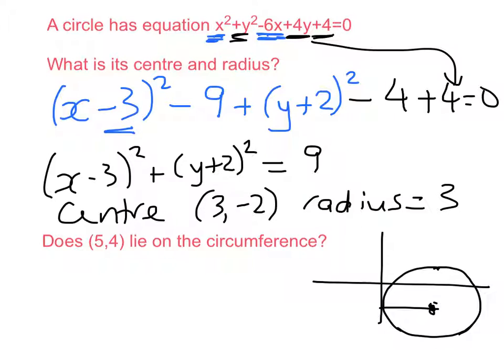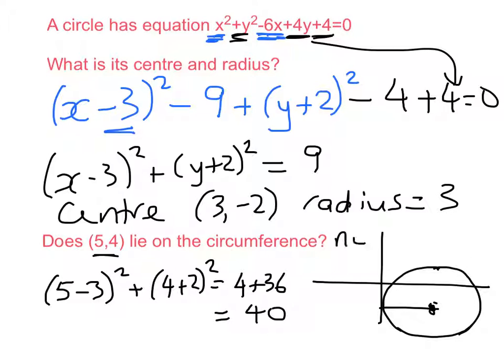The second thing we need to figure out is does the point 5, 4 lie on the circumference? So to do this, we want to substitute 5, 4 into either of those equations, but I'd suggest factorised is easier, and we just want to see what we get. So substituting into the left-hand side, 5 minus 3 squared plus 4 plus 2 squared is equal to 2 squared, so 4 plus 36, which is equal to 40. So no, it does not lie on the circumference. And moreover, we can see how far it is from the centre is greater than 9, so that's telling me that it lies outside of the circle, not inside.